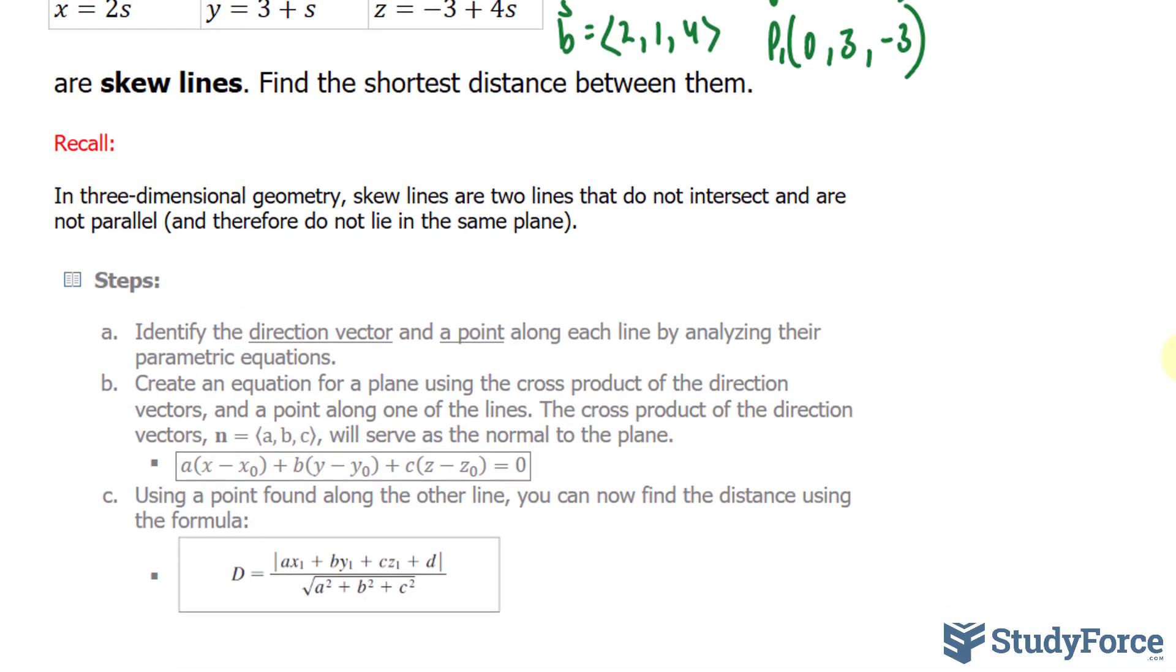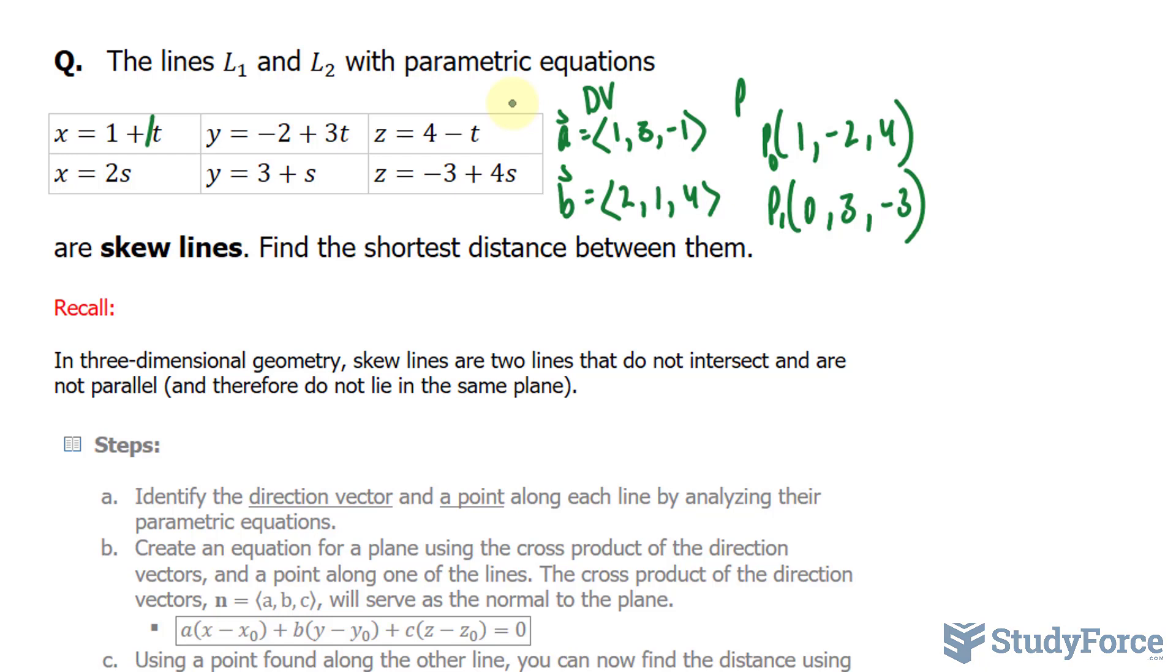Now there's a reason why we're doing all this. Let's move on to b. Create an equation for a plane using the cross product of the direction vectors. So remember, these are our direction vectors, and I'm going to take the cross product of these two. Remember what happens when you take the cross product of any two vectors. You end up with a third vector that is at right angle to both of those vectors.